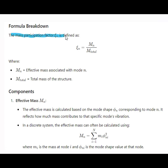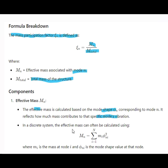The mass participation factor is defined as M_N divided by M_total, where M_N is the effective mass associated with mode N and M_total is the total mass of the structure. The effective mass is calculated based on the mode shape corresponding to mode N, and it reflects how much mass contributes to that specific mode's vibration. In a discrete system, the effective mass can be calculated as a summation from i equal to 1 to N, where M_i is the mass at node i and phi_N is the mode shape value at that node.